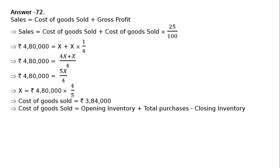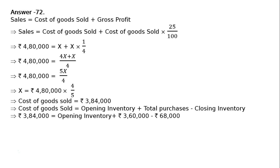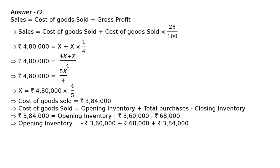Now extend the formula: Cost of Goods Sold = Opening Inventory + Purchases − Closing Inventory. Everything is given except Opening Inventory. Substituting: ₹3,84,000 = Opening Inventory + ₹3,60,000 − ₹68,000. Therefore, Opening Inventory = ₹3,84,000 − ₹3,60,000 + ₹68,000 = ₹92,000. This is our final answer.